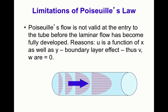There are limitations to Poiseuille's formula. It is not valid at the entry to the tube before the flow becomes laminar and fully developed. Near the inlet, u is a function of x as well as y — a consequence of boundary layer effects at the tube entrance.